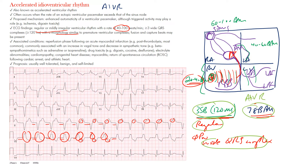Associated conditions include the reperfusion phase after acute MI or myocardial infarction — most commonly post-thrombolysis, where it's usually well tolerated. It's also associated with increased vagal tone, decreased sympathetic tone, drug toxicity from digoxin or cocaine, electrolyte abnormalities, cardiomyopathy, congenital heart disease, myocarditis, and return of spontaneous circulation after cardiac arrest.